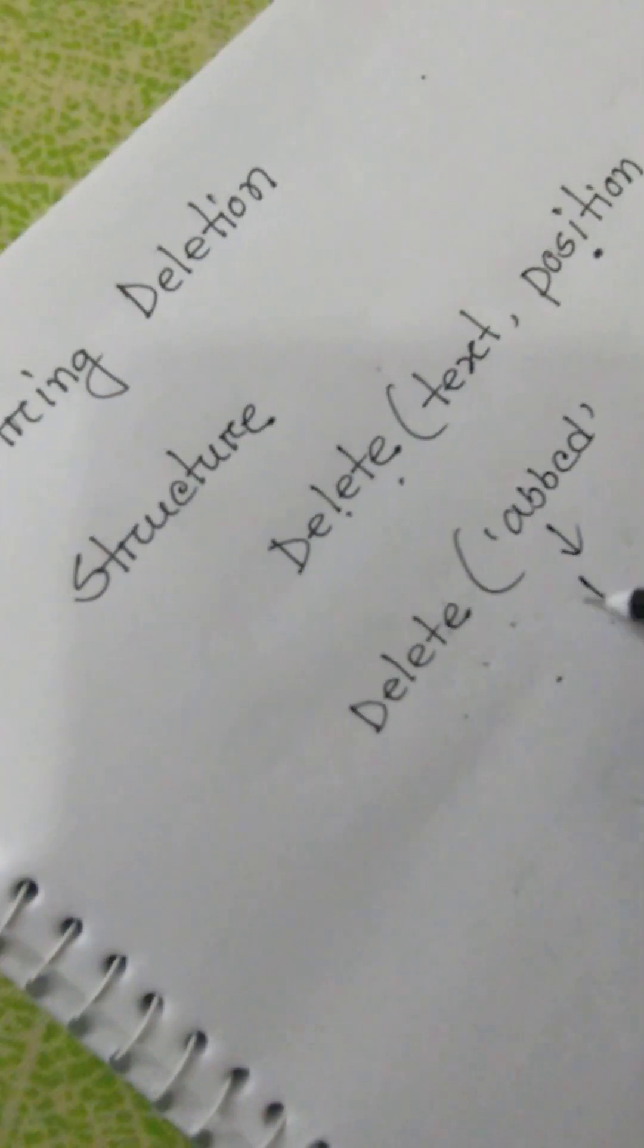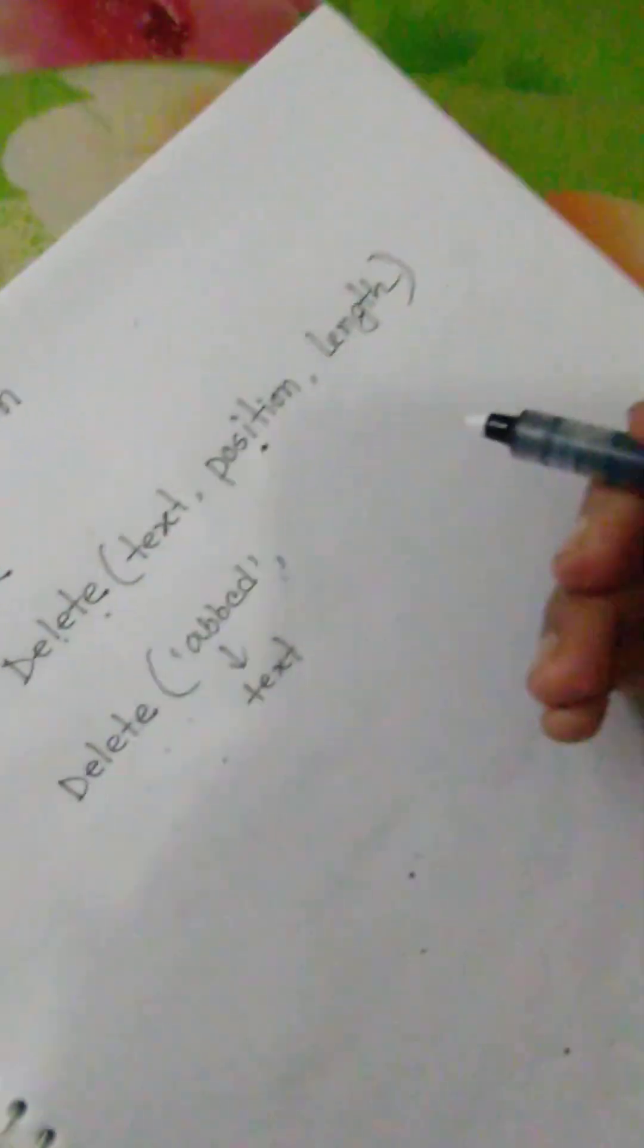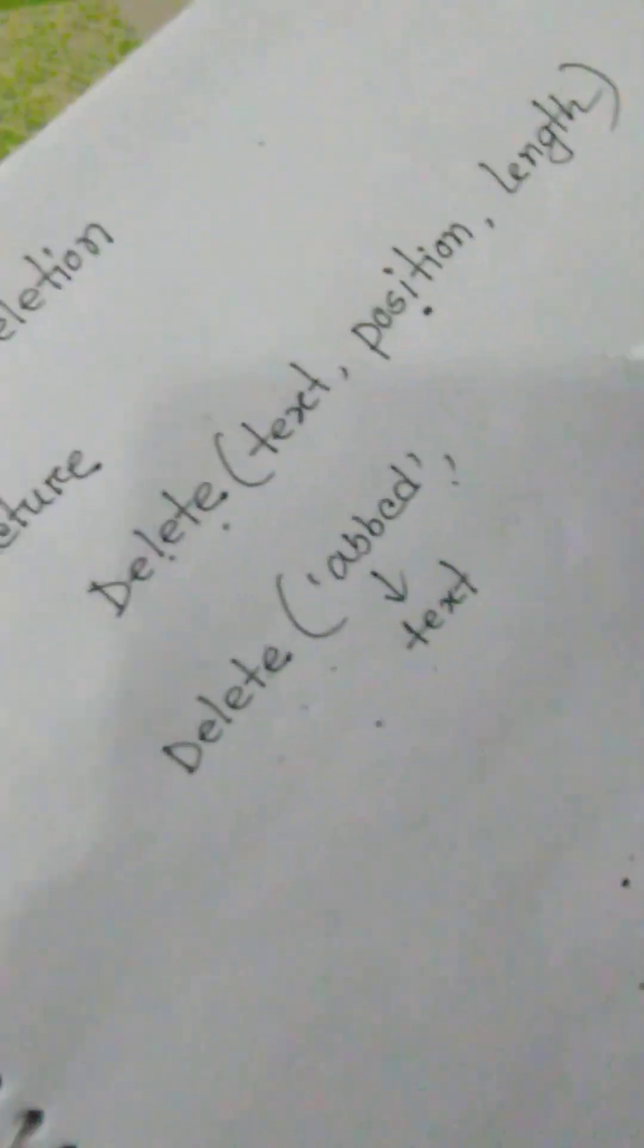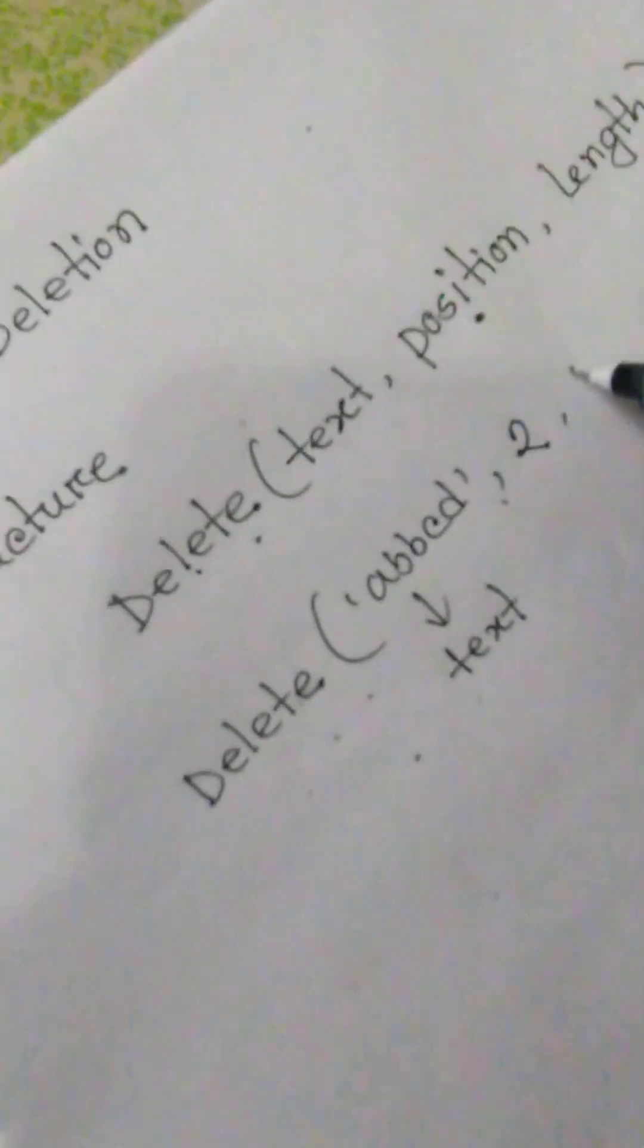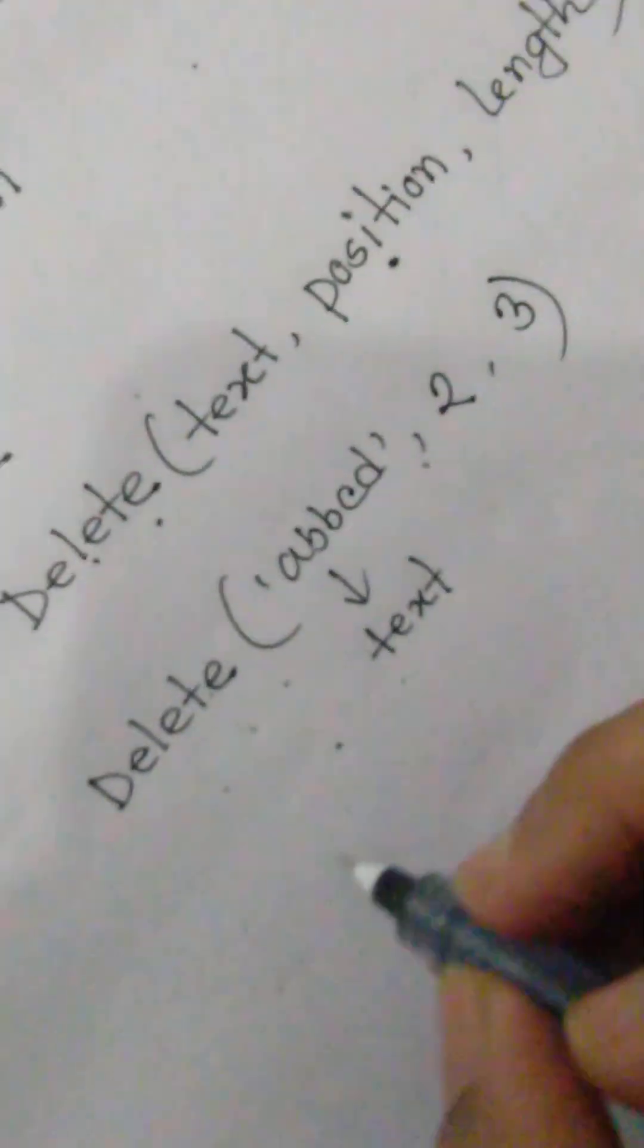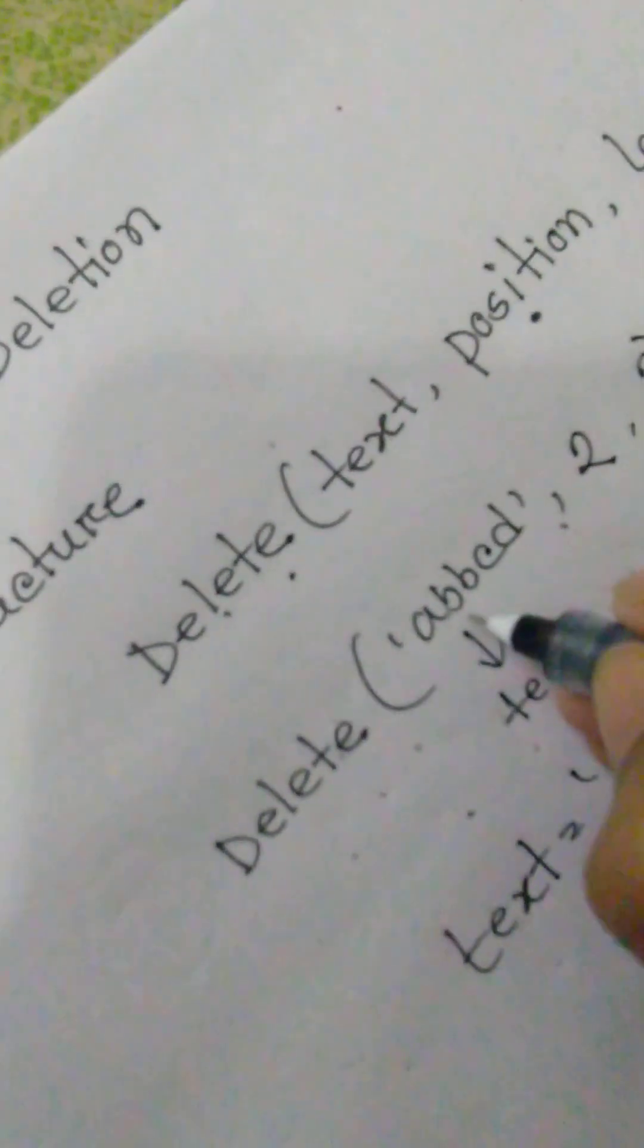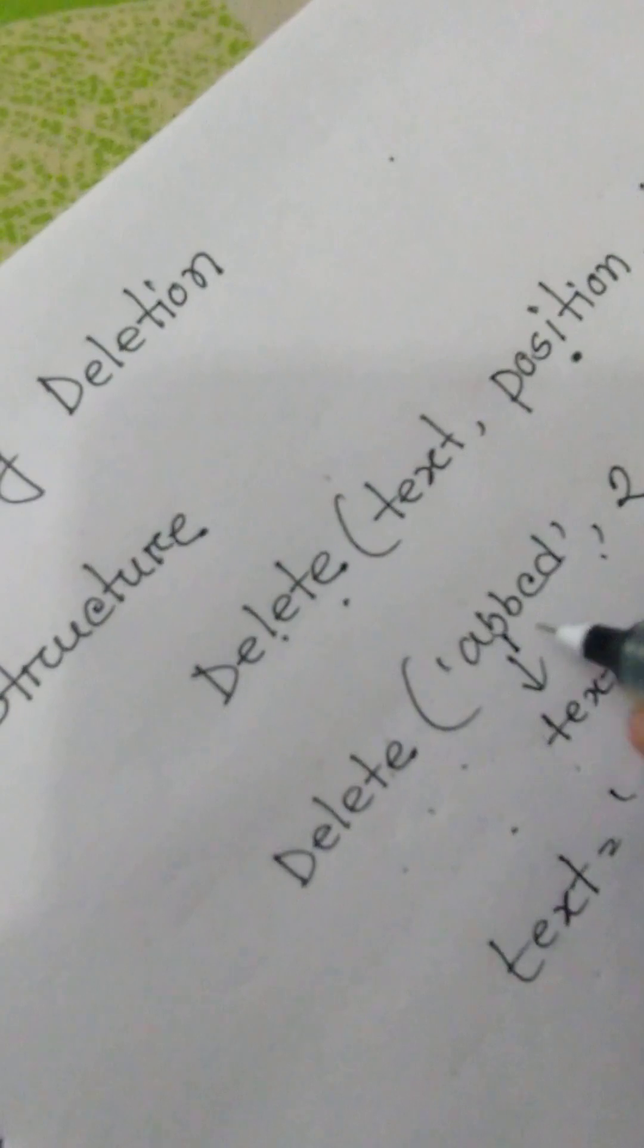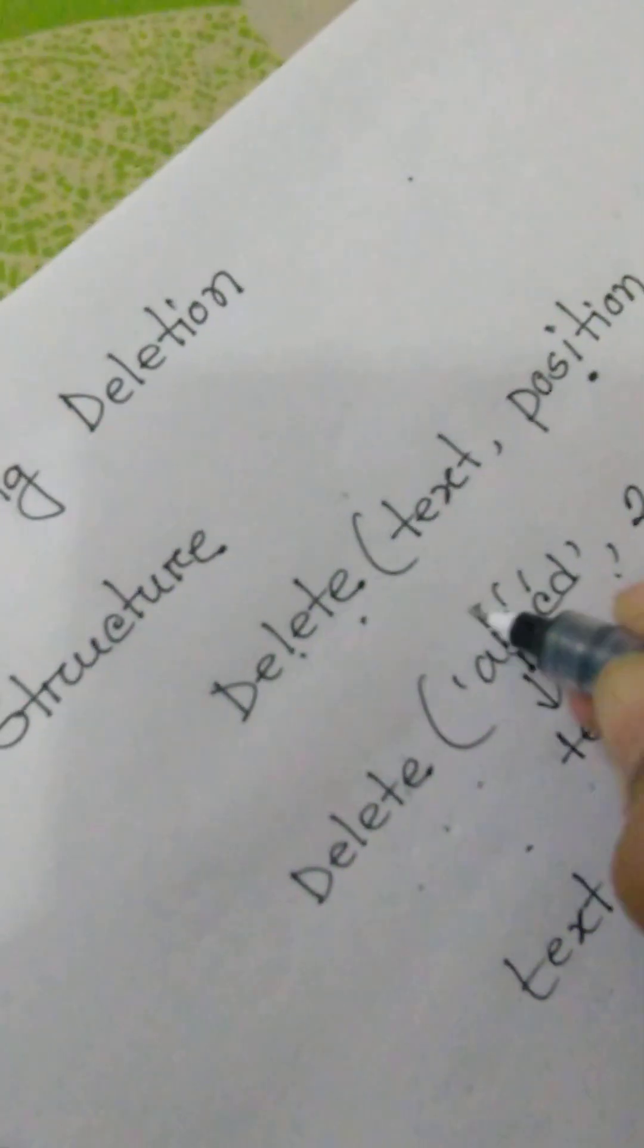Then text will be, from position two we have to delete three: one, two, three. We have to delete this one. That means A D will be the final text.